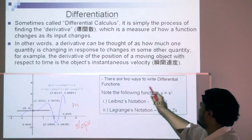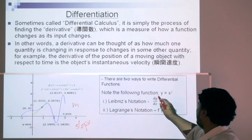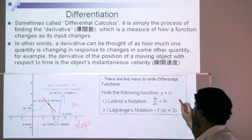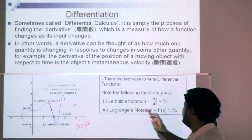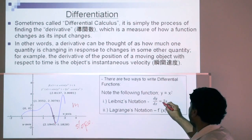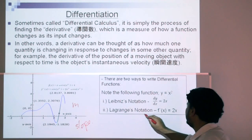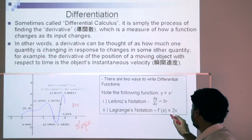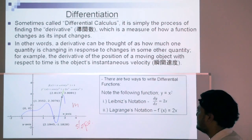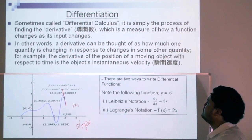There are two ways to write differential functions. Notice the following function, y equals x squared. In Leibniz notation, we write dy over dx is equal to 2x. Or, the other way we can write it is in Lagrange's notation: f dash x is equal to 2x.